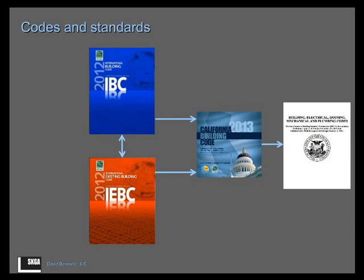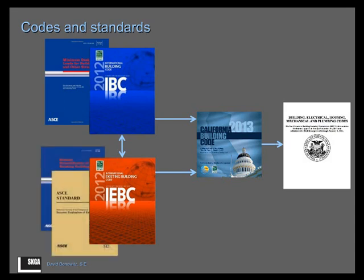The model codes themselves refer to various standards. The current philosophy in code development is that the code presents the policy, the provisions, and directions of what you have to do and when. But for the how and the technical details, the code increasingly relies on standards it can simply reference. You're probably familiar with ASCE 7, which is deeply embedded in the 2012 IBC. Similarly, the 2012 IEBC references ASCE 3103 and 4106 for technical details on evaluation and seismic retrofit. That's the relationship between the code and the standard.